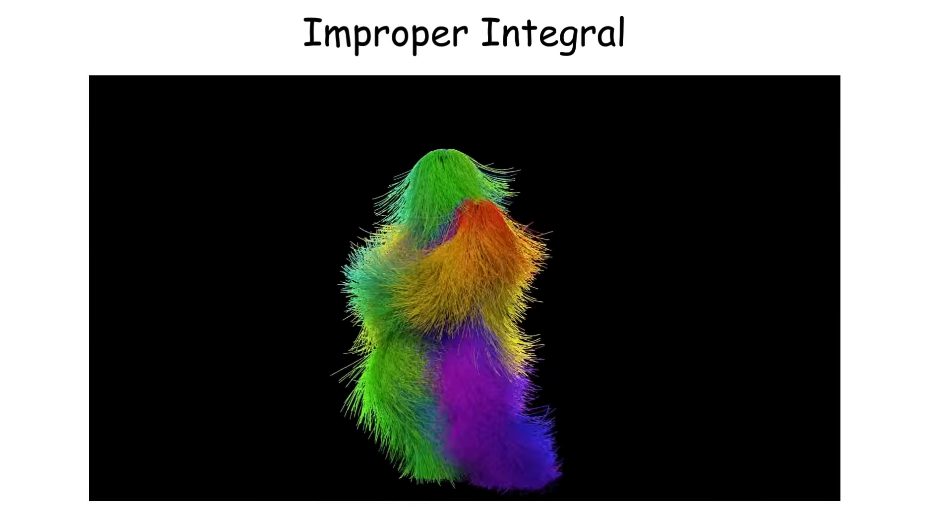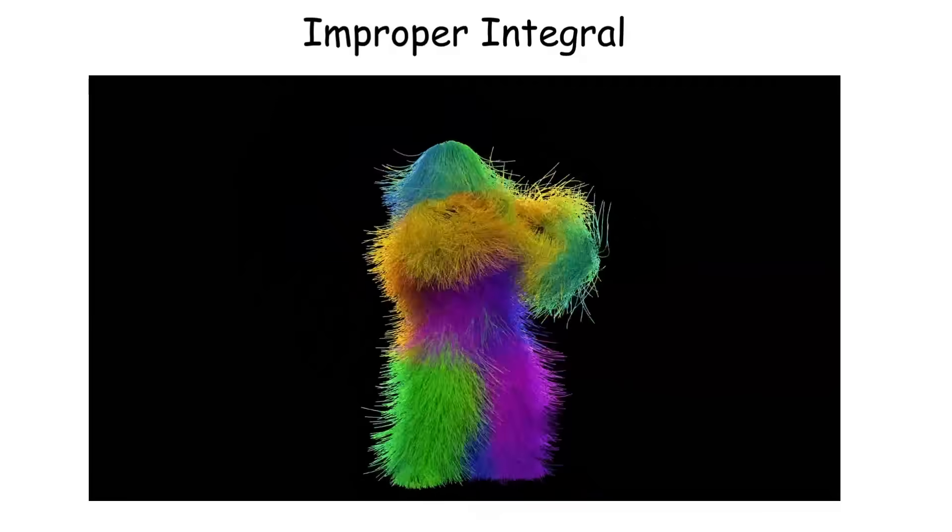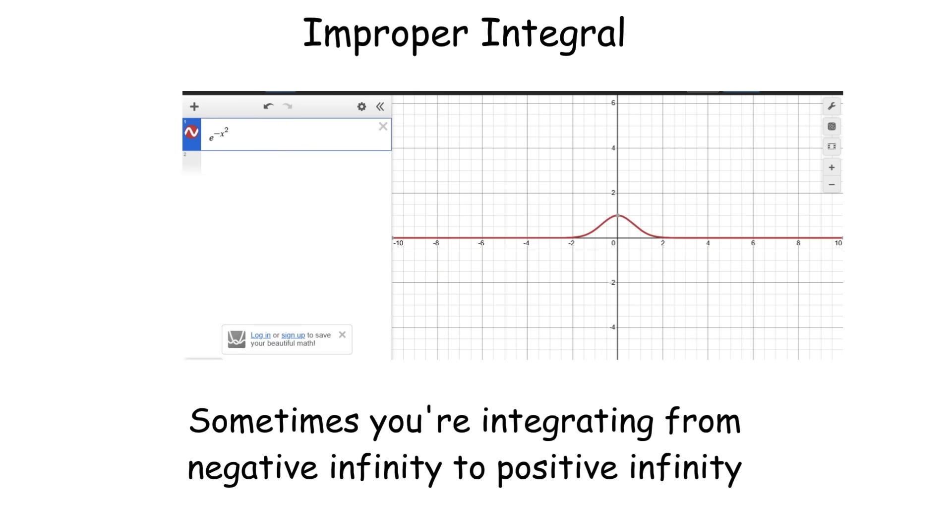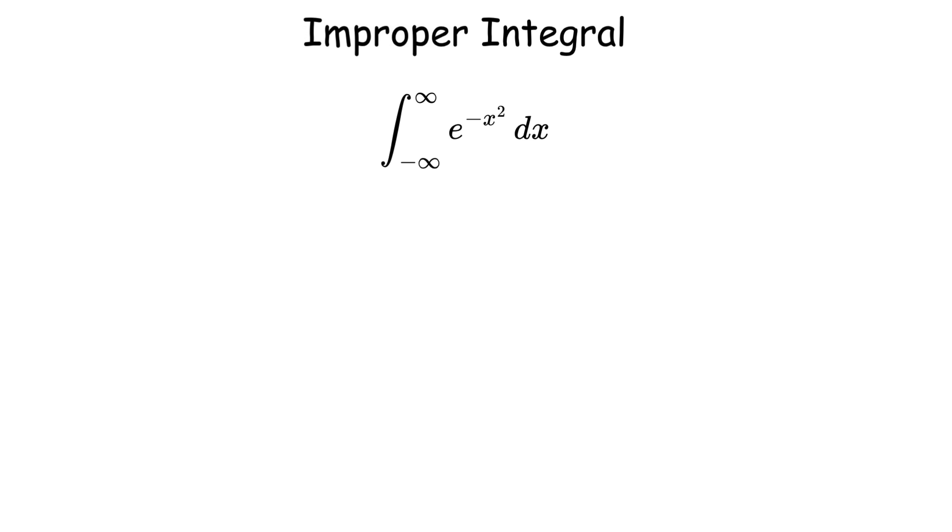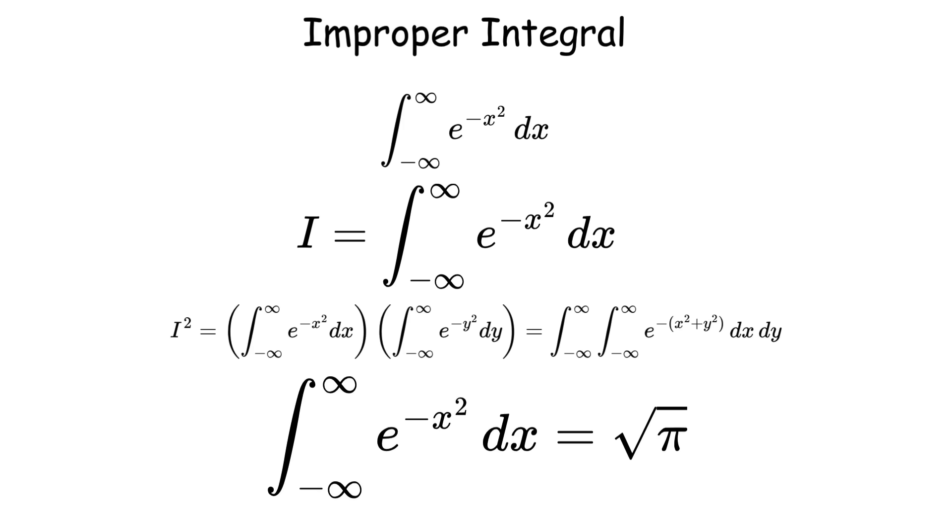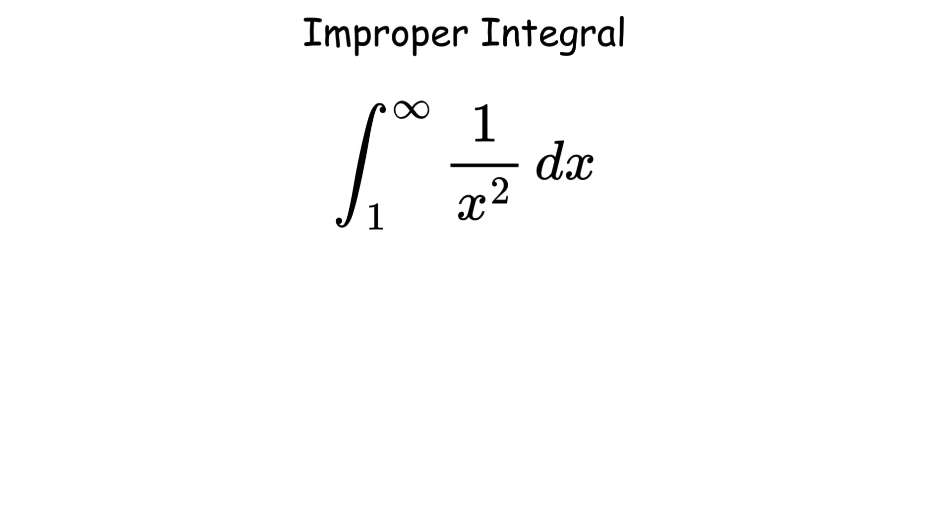Improper integrals are what happen when you get a bit too ambitious with your limits. Sometimes you're integrating from negative infinity to positive infinity, or sometimes your function has a discontinuity right in the middle of where you're trying to integrate. Instead of giving up like a normal person, mathematicians decided to take limits again.